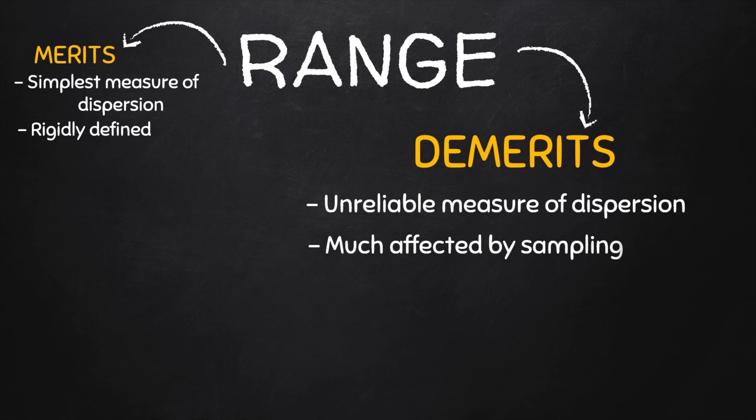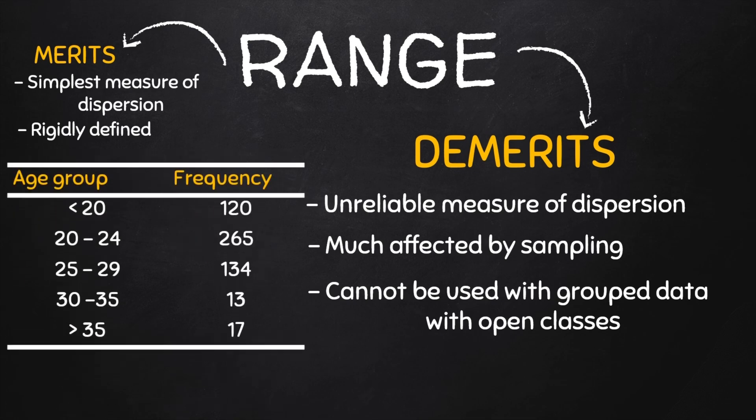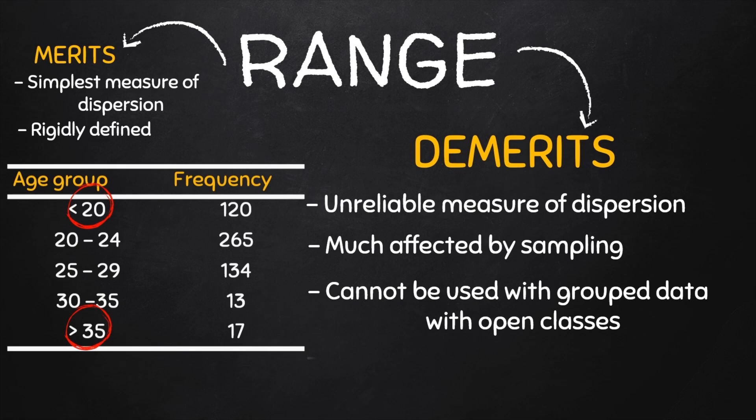One other demerit of range is that the range cannot be used if we are dealing with group data that has open-ended classes. So if we have group data like this, for example, then it is impossible to find the range because here we don't know what the smallest value is and here we don't know what the largest value is. This is also why it is not good to use open-ended classes when grouping numerical data.